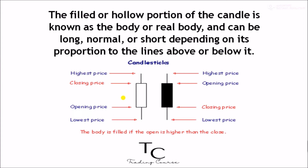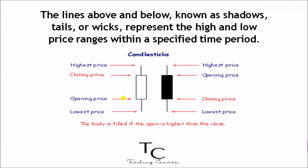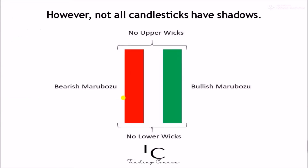The filled or hollow portion of the candle is known as the body or real body, and can be long, normal, or short depending on its proportion to the lines above or below it. The lines above and below, known as shadows, tails, or wicks, represent the high and low price ranges within a specified time period. However, not all candlesticks have shadows.